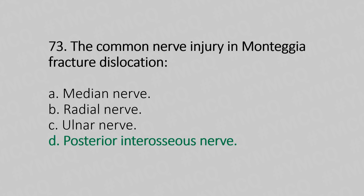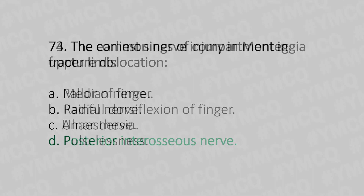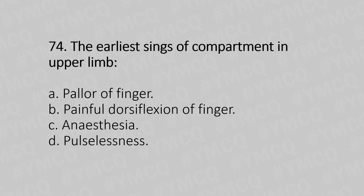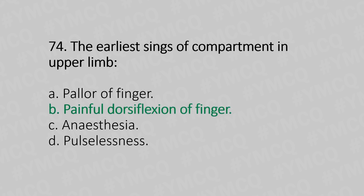Now let's move to question number 74. The early sign of compartment syndrome in upper limb: Option A, Pallor of fingers; Option B, Painful dorsiflexion of fingers; Option C, Anesthesia; Option D, Pulselessness. And the answer is Option B, Painful dorsiflexion of fingers.